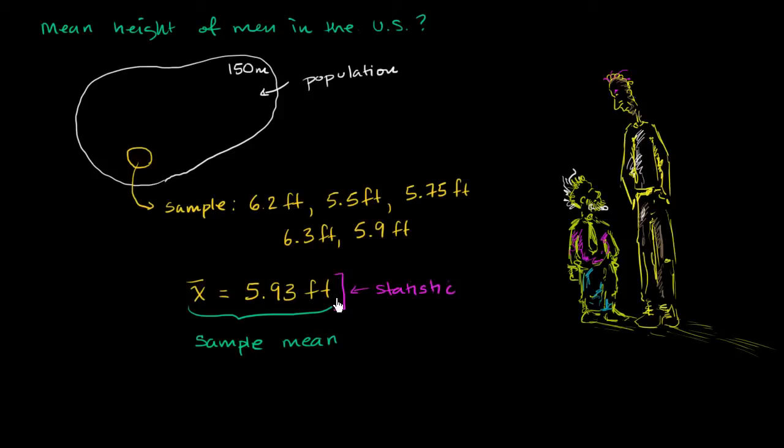Now, you might be saying, what notation do we use if somehow we are able to measure it for the population? Well, let's say we can't even measure it for the population, but we at least want to denote what the population mean is. The population mean is usually denoted by the Greek letter mu (μ). And so in a lot of statistics, it's calculating a sample mean in an attempt to estimate this population mean.